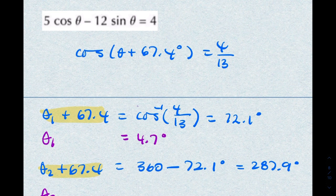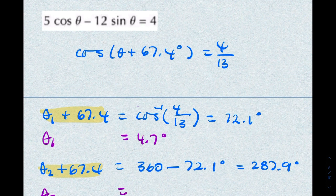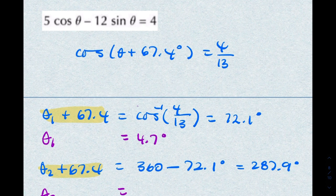And theta 2 equals 287.9 minus 67.4, which is 220.5.